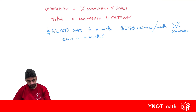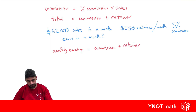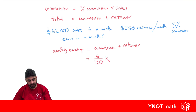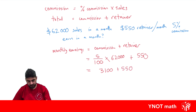Our monthly earnings is going to be the commission plus the retainer. To work out the commission, it's the percentage multiplied by the sales: five over 100 multiplied by $62,000, plus our retainer of $550. Five percent of $62,000 gives us $3,100, plus $550, so we're going to make $3,650 in a month.